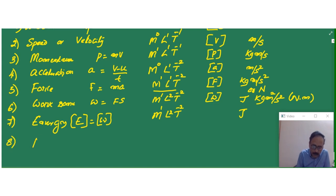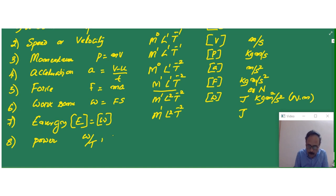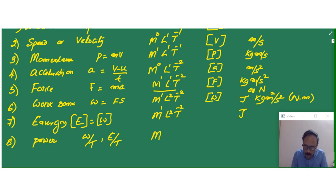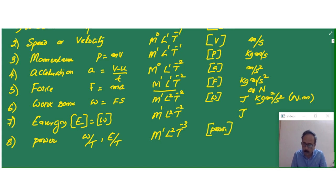Now after energy we write power. Power can be defined as the rate of doing work, or energy divided by time. So energy we have already written as M L2 T-2, and one more T is in the denominator. Therefore it should be M1 L2 T-3. This is the dimensional formula for power.